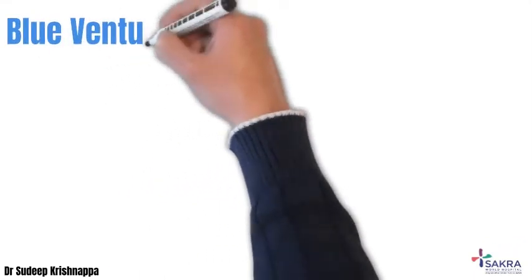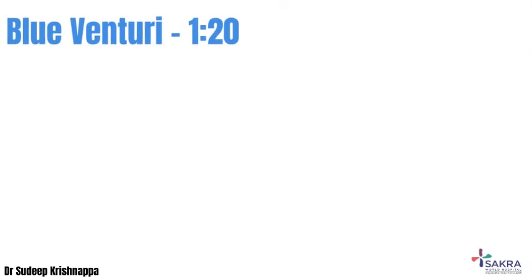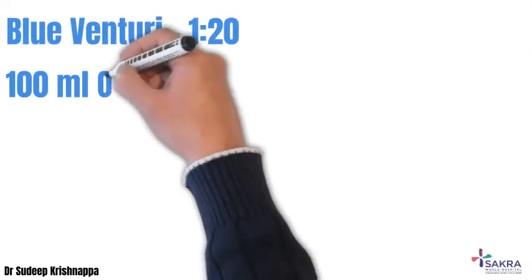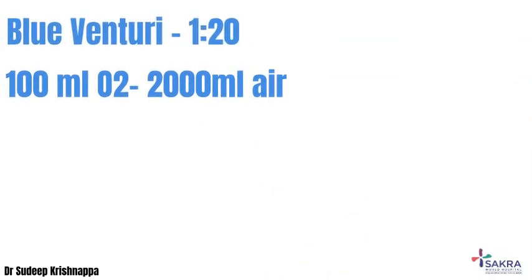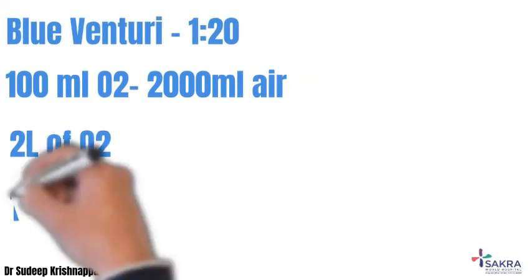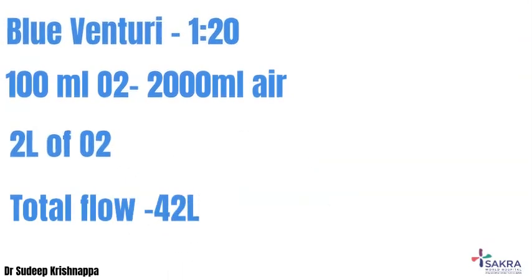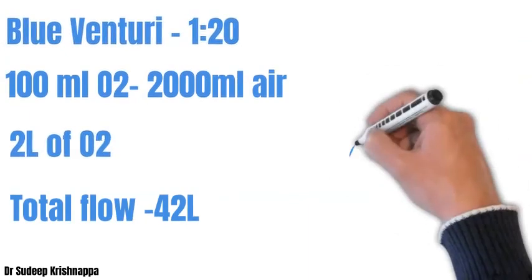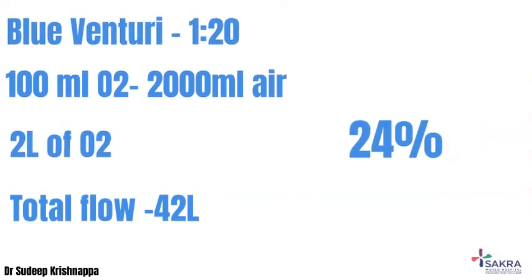The blue venturi has an entrainment ratio of 1:20. For each unit of oxygen flowing through the venturi device, 20 units of room air would be entrained, so 100 ml of oxygen entrains about 2000 ml of air. With the recommended flow rate of 2 liters of oxygen, another 40 liters of room air would be entrained, generating a total flow of 42 liters. In the mixture: 100 ml of oxygen contributes 100 ml and 2000 ml of air contributes about 400 ml of oxygen, so the total volume of 2100 ml has around 500 ml of oxygen — translating to an FiO2 of 24 percent.